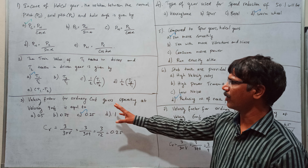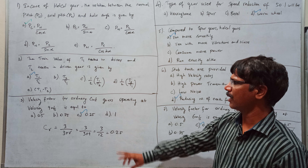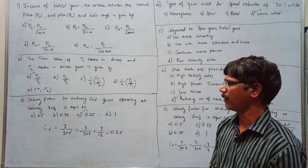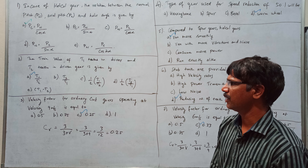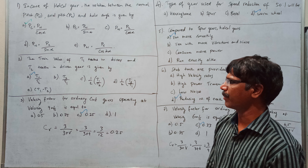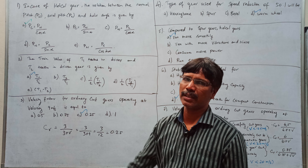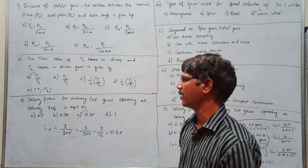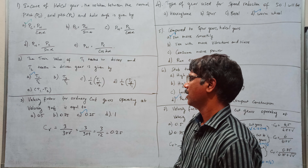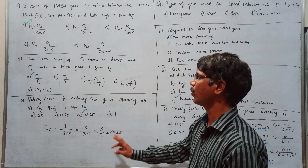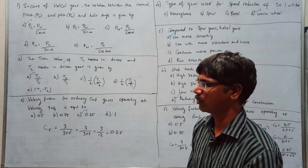Ordinary gear: velocity is 9 meters per second, ordinary cut. Velocity factor is 3 divided by 3 plus V, which equals 3 — approximately 0.25.